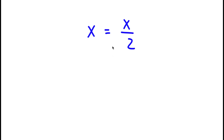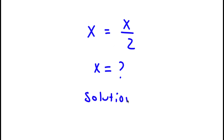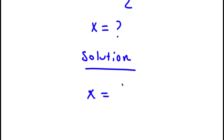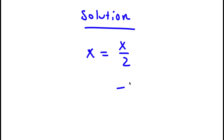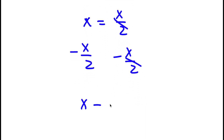For this problem, I have x is equal to x over 2, and I want to find the value of x. For my solution, I first start with x is equal to x over 2. Now, I'm going to subtract x over 2 on both sides. These two x over 2s cancel out, and now I'll be left with x minus x over 2 is equal to 0.